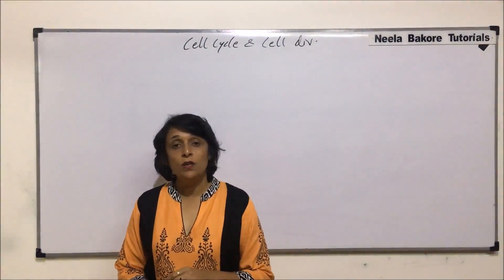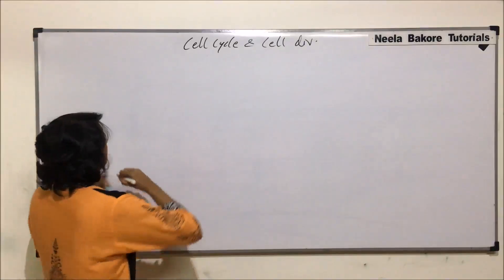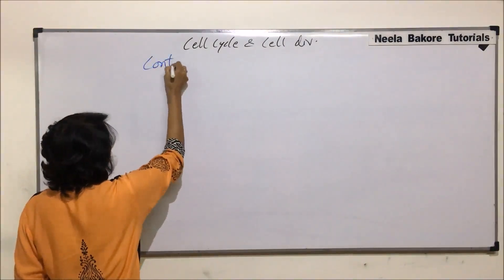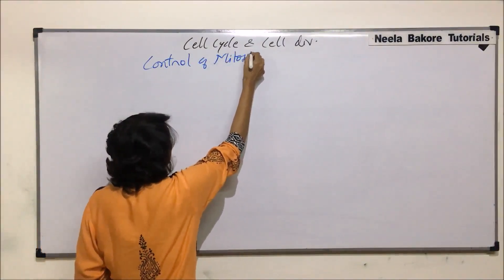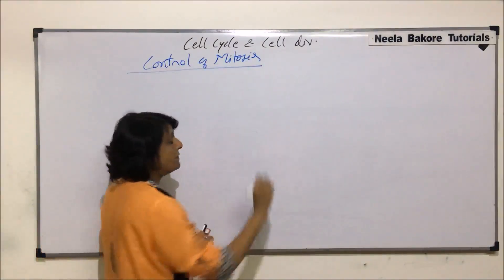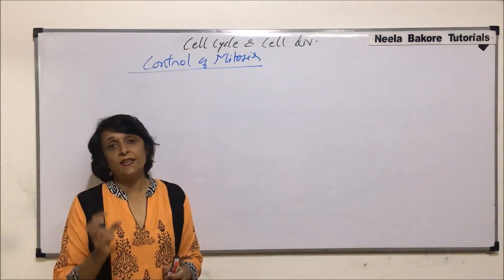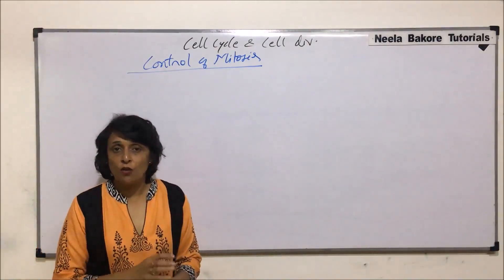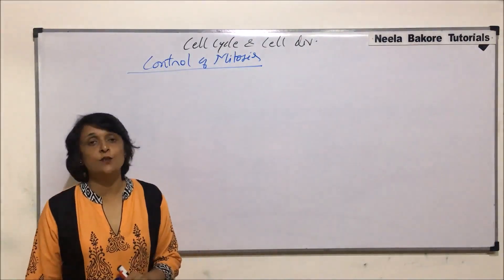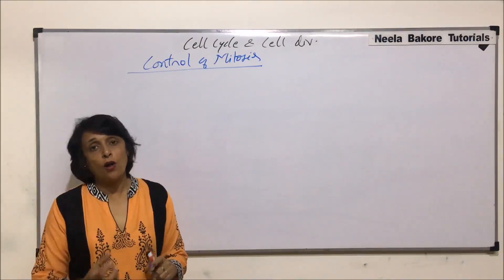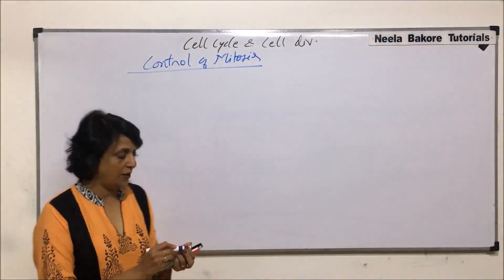Let us now talk about the control of mitotic division, control of mitosis. When we were talking about the cell cycle, we said that it is in the genetic material of a cell that how many times would it divide. But there are certain factors which are responsible or which are believed to be the controlling factors for mitosis.